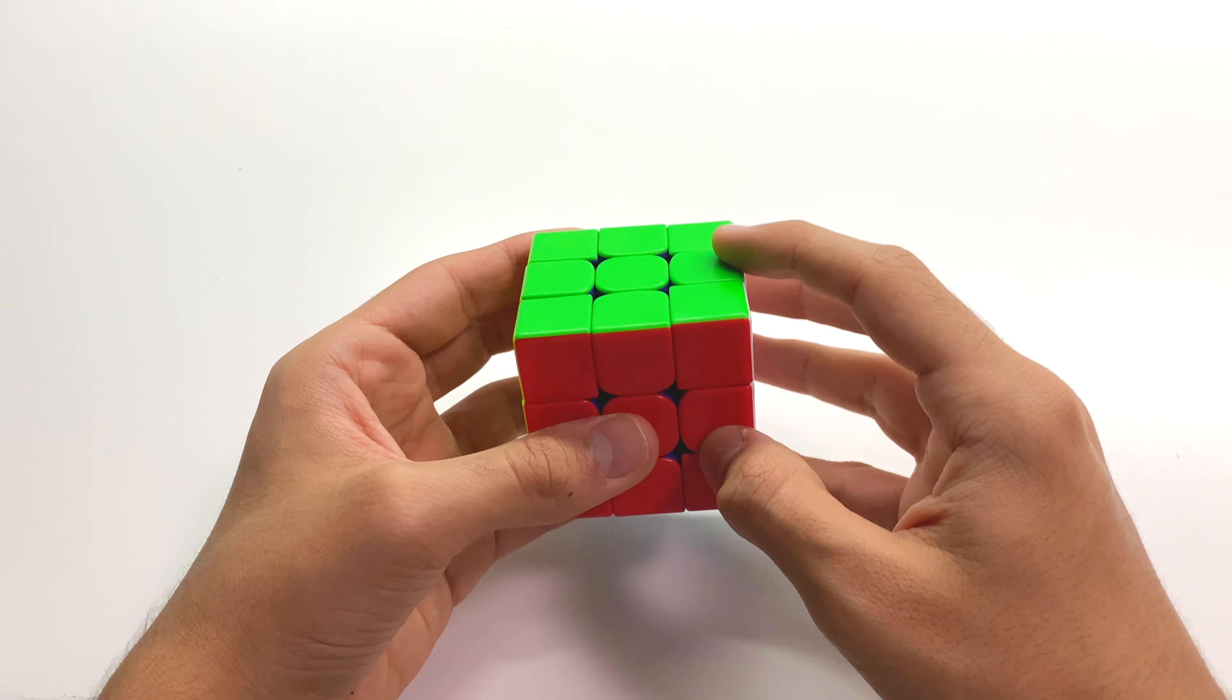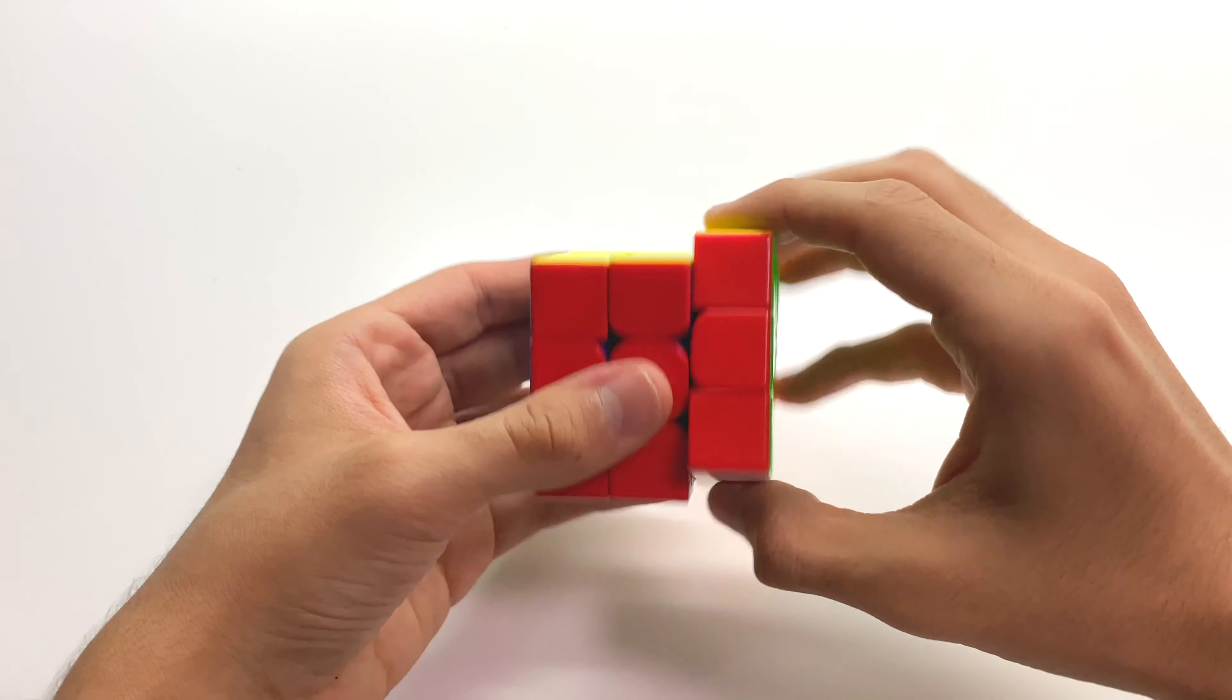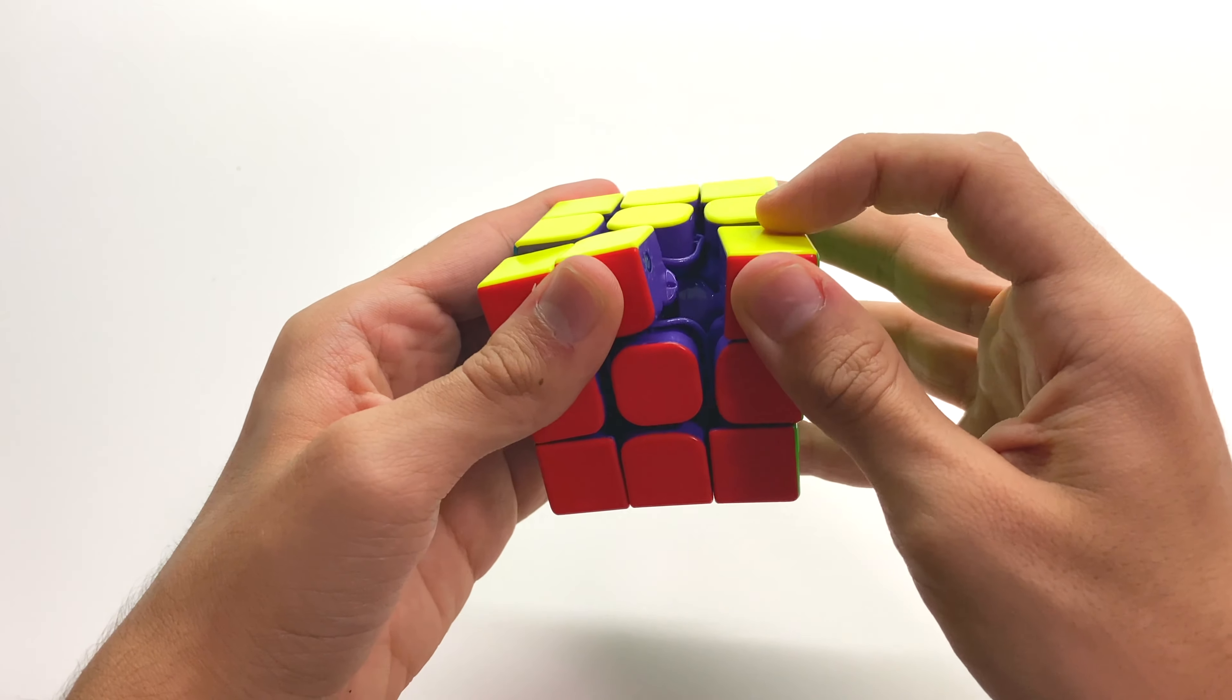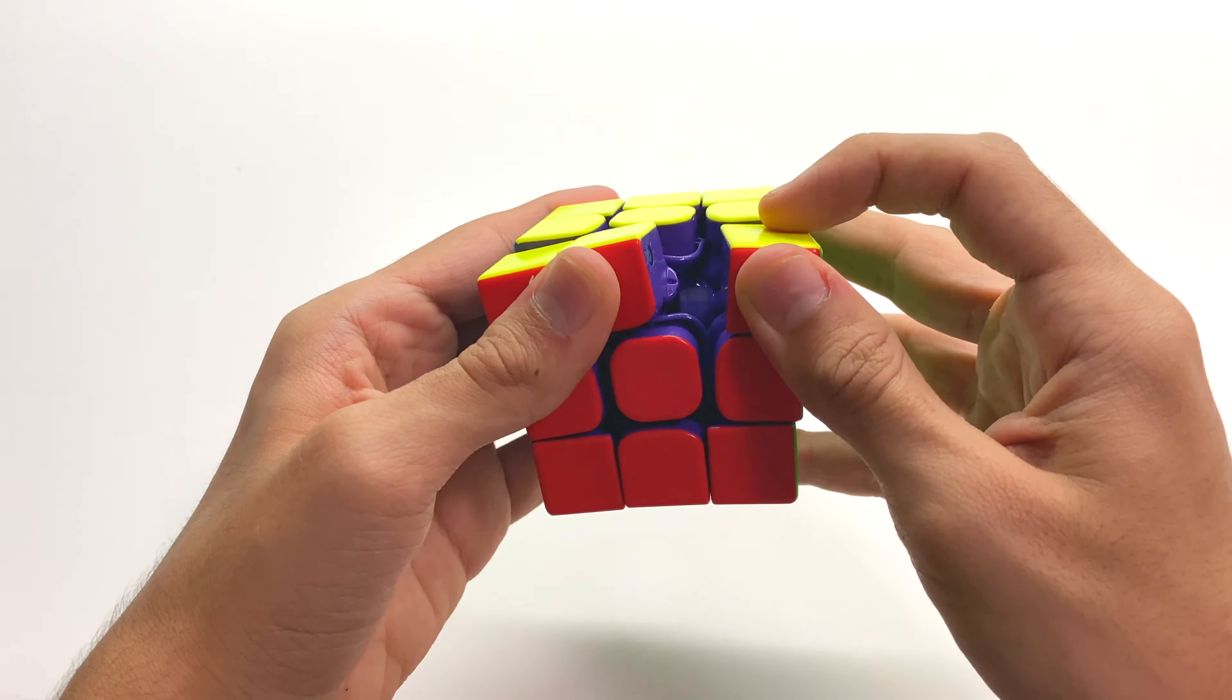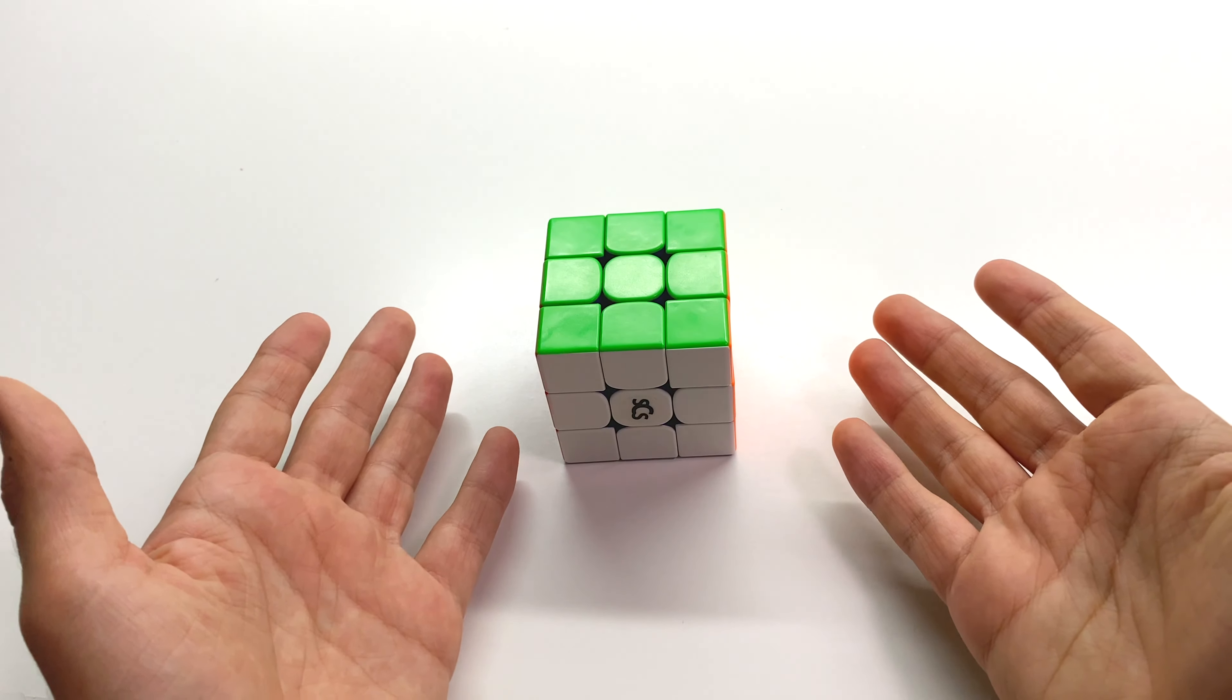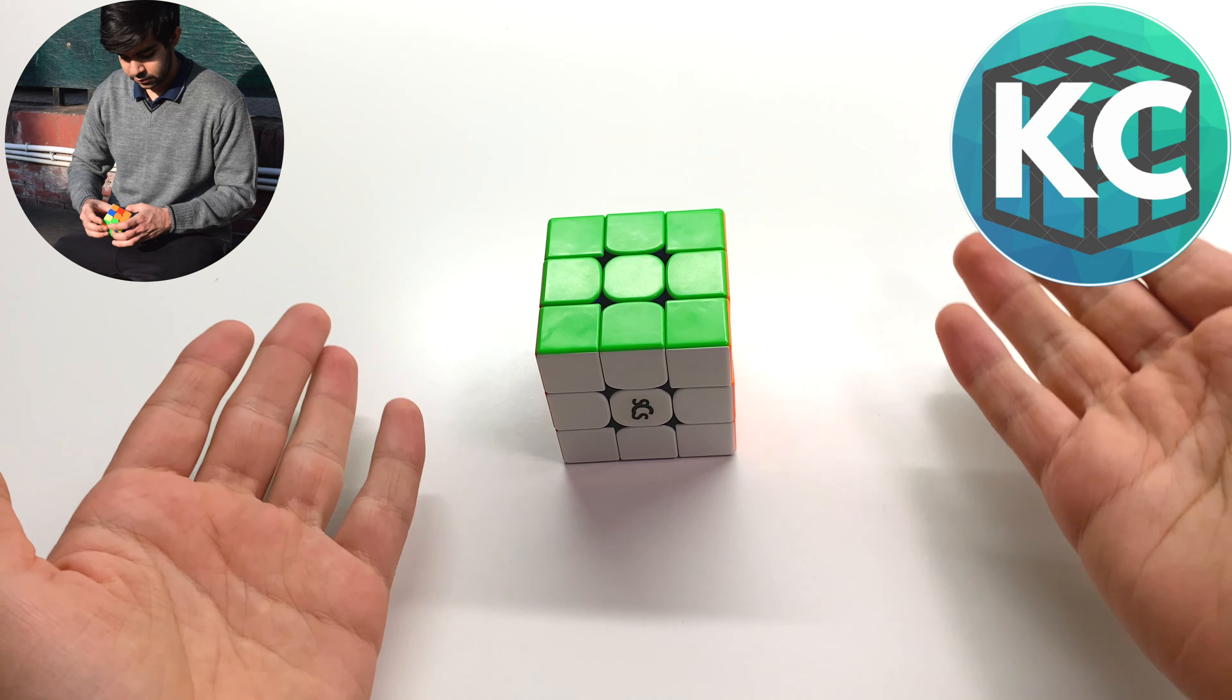Now, let's talk about the one thing that sets this cube apart from every other speed cube on the market, the purple internals. While performance-wise, this makes absolutely no difference, aesthetically, this makes the cube look so much nicer and a lot more fun to use if that makes sense. And now it's time for the big question, is this cube my main? Before I answer that question, I want to pass it over to a couple of special guests, Kunal Oak and Kiwi Cuber.